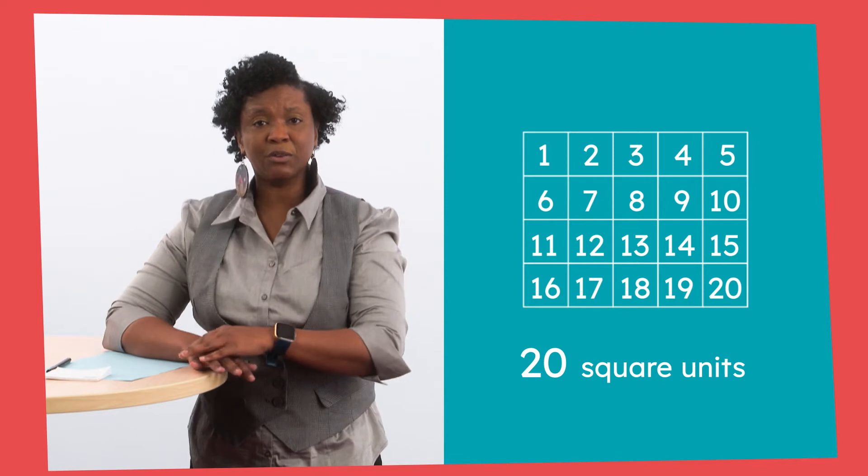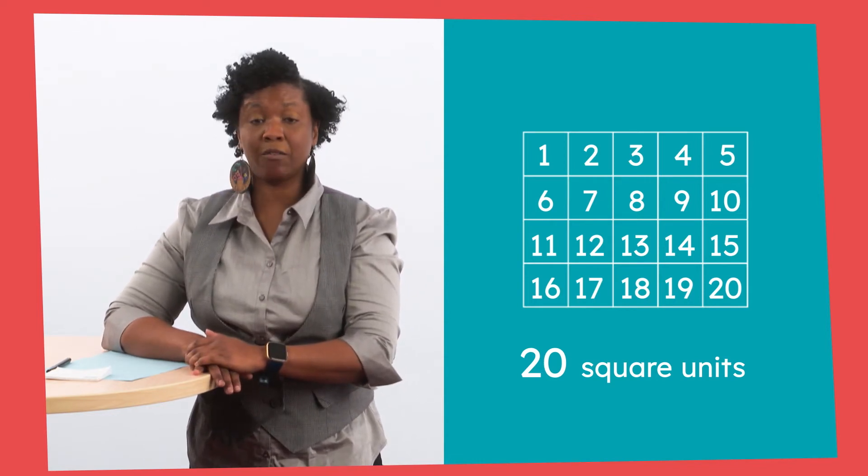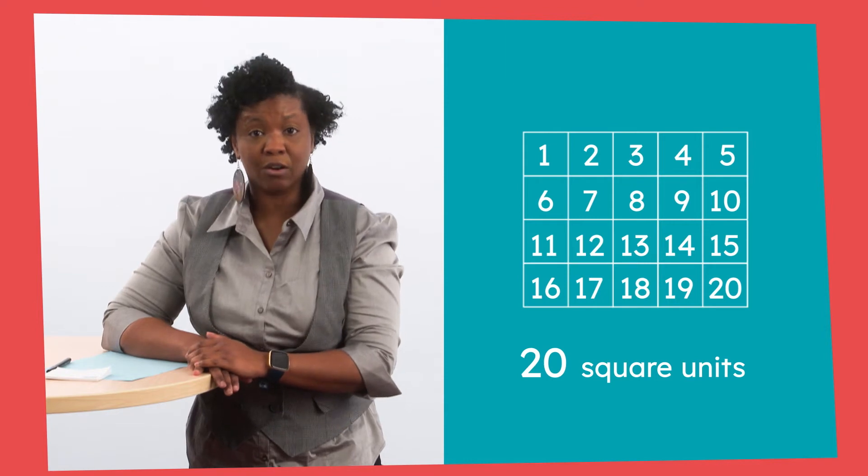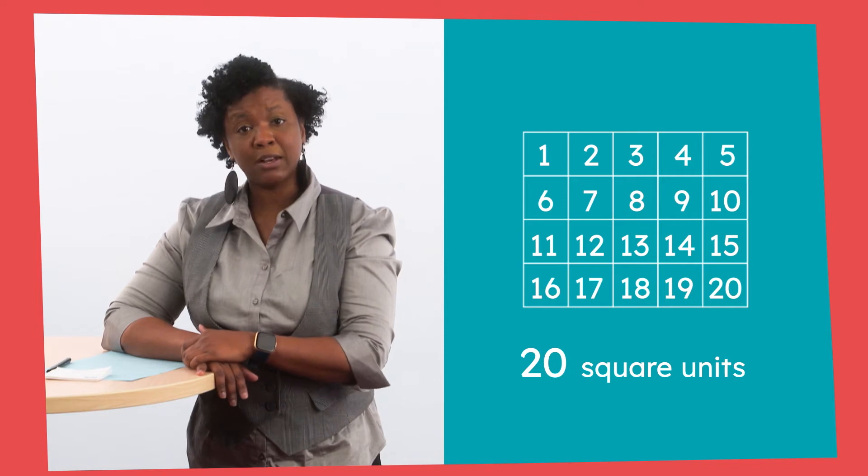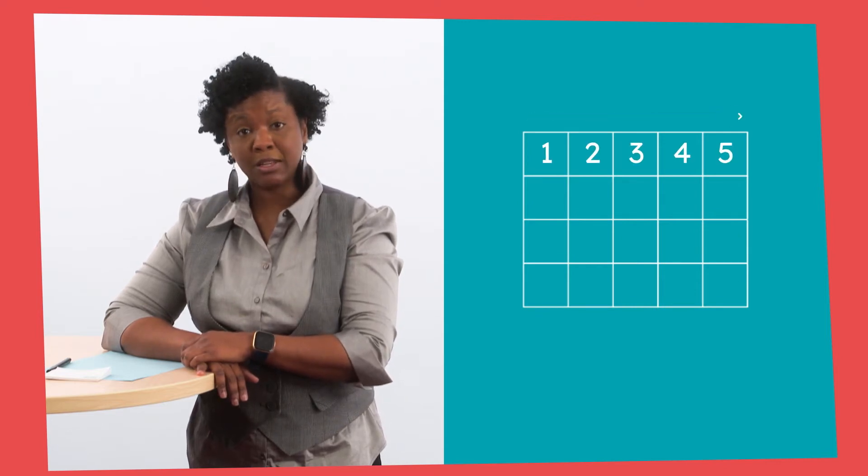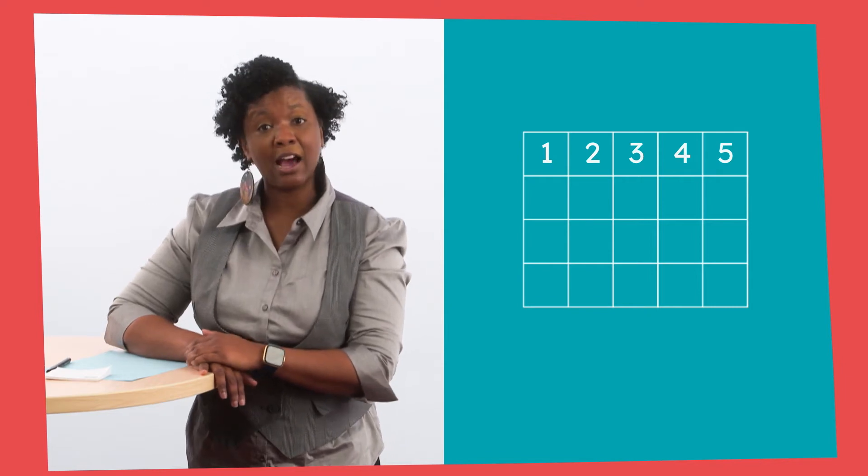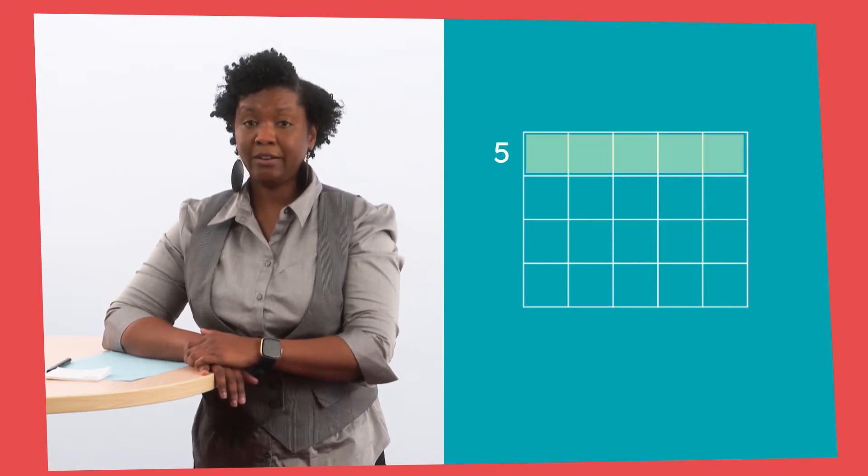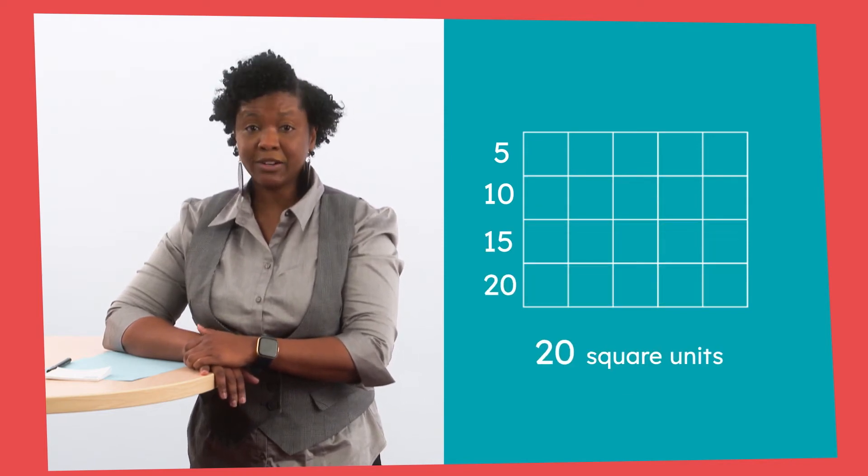Oh, did you notice something? I noticed that the square units that we covered the yard with made a rectangle. That seems connected to a way that I heard someone else counting. I heard someone else say that they noticed that the top row of our rectangular area measured 5 square units. That helped them to skip count by 5 to determine the total area. Count with me. 5, 10, 15, 20. 20 square units.